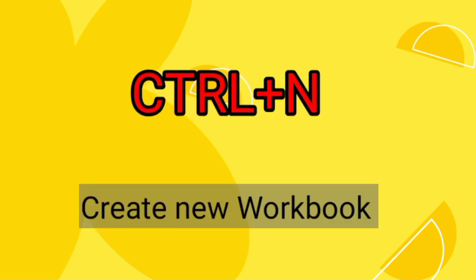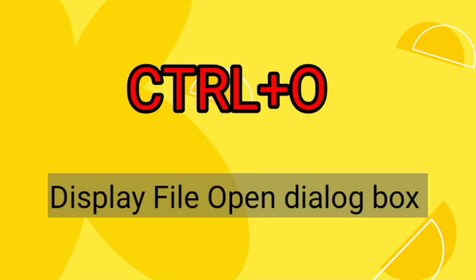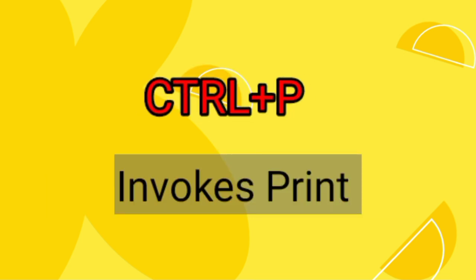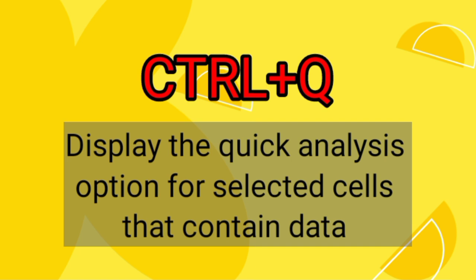Ctrl N is used to create a new workbook. Ctrl O is used to display the file open dialog box. Ctrl P is used to invoke print. Ctrl Q is used to display the quick analysis option for selected cells that contain data.